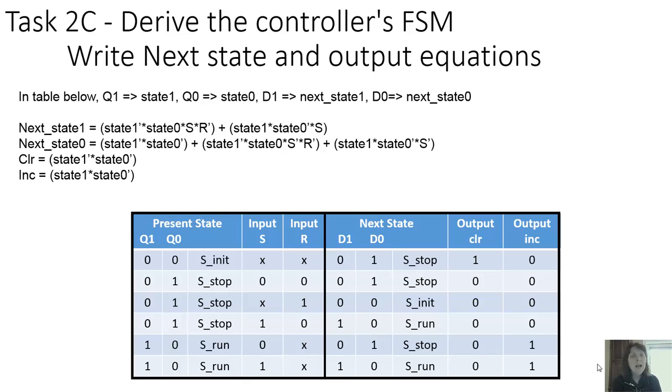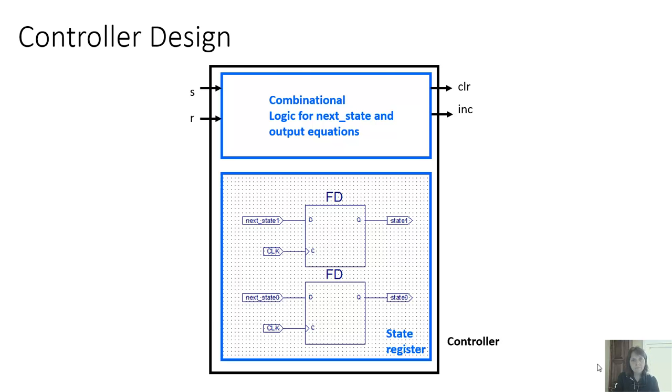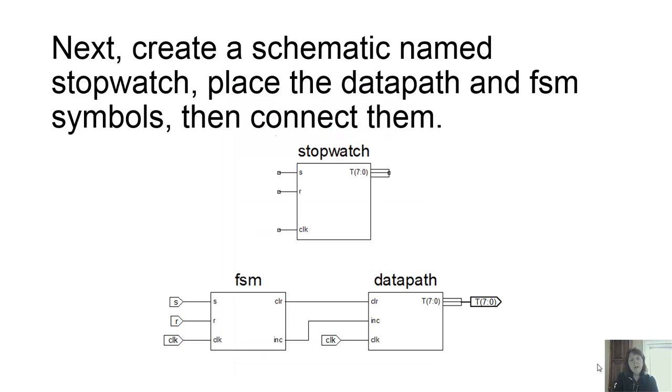The next step is to go ahead and take our finite state machine and data path and combine them together into our basic custom processor. Again, using a schematic, we've created symbols for each of our lower level designs and we put them together into a top level schematic. After we've completed that, we need to go ahead and capture a revised HLSM.